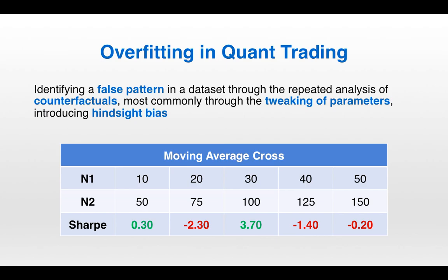This is a very clear example of an overfit strategy. You can't just say you've discovered the magic combination — if you use 30 and 100, the strategy will make so much money — because it's overfit. You should have stable parameters; there should be smoothness. Instead, it's very jagged. If you change the parameters just a little bit, the Sharpe ratio changes dramatically. It's totally oversensitive.